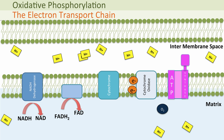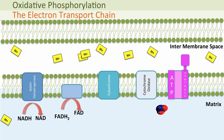At the end, once the electrons reach cytochrome oxidase, we need to get rid of them so the process can happen again. We need a final electron acceptor, which we use oxygen for. If you remember back to the original reaction for respiration, we need oxygen — it's aerobic respiration. The oxygen picks up the extra electrons, combines with hydrogen, and actually forms a molecule of water. And again, if you remember the original respiration equation, water is a waste product. So this is where the water comes from, and it will be released at this point.